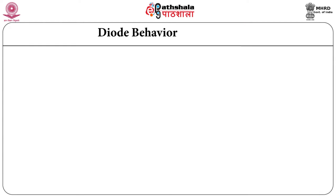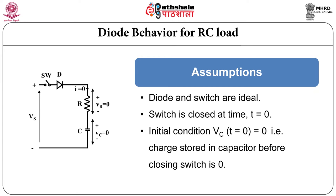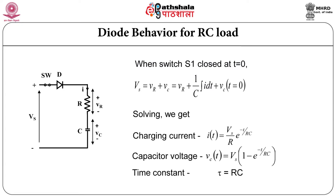Now we are going to study the behavior of a diode for different types of loads. Let us consider the diode circuit with RC load as shown in the figure. V_s is the supply; there is one switch and then a diode with RC load connected in series. Assumptions: diode and switch are ideal, switch is closed at time t equals 0, and initial condition is 0 — charge stored in capacitor before closing the switch is 0.